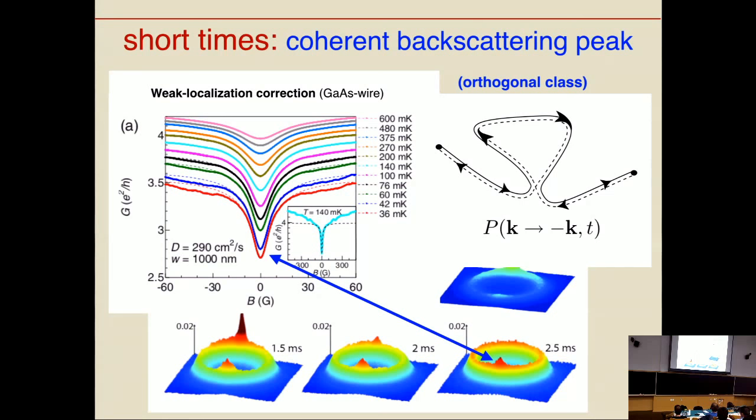In a self-intersecting path, amplitudes can propagate along either direction of the loop. This leads to constructive interference, an enhanced return probability, and thereby reduced conductivity. Applying a magnetic field dephases the amplitudes accumulated while propagating along either direction of the loop, suppressing the interference correction. In momentum space, the momenta of the incoming and outgoing segments of these paths are anti-aligned, which is exactly the coherent backscattering peak.